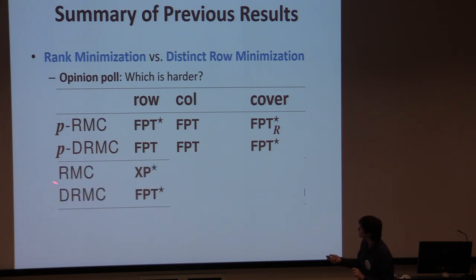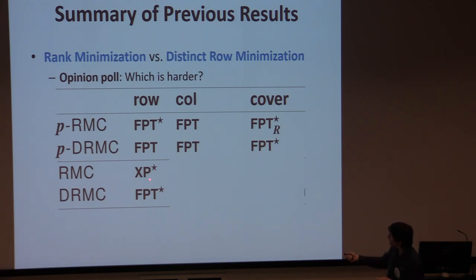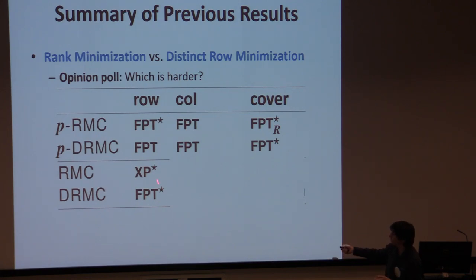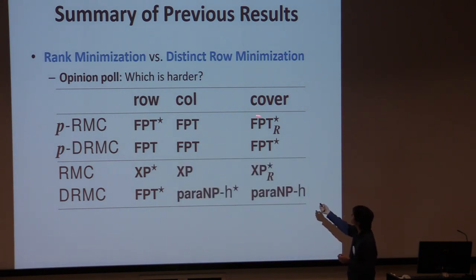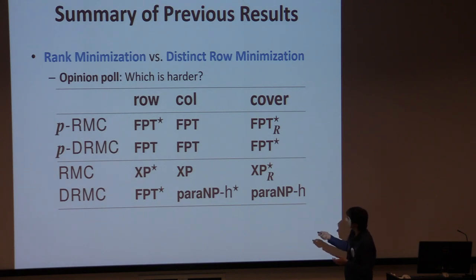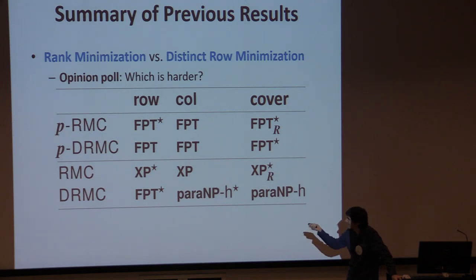But once you move on to the case where the domains are not fixed but are part of the input, there is some distinction. In particular, we don't know whether this is FPT or not — we just have an XP algorithm for rank matrix completion. But for distinct row matrix completion, we got FPT. Once you look at other parameters like number of columns or the covering number, you get para-NP hardness — NP hardness for fixed values of the parameter.